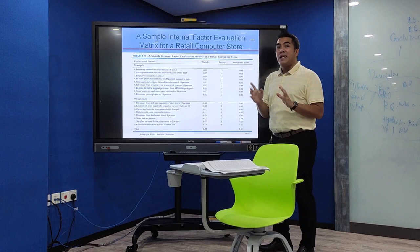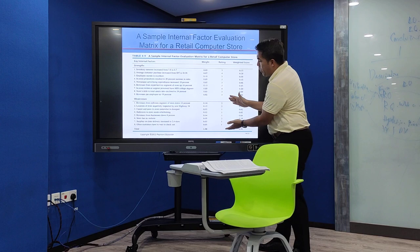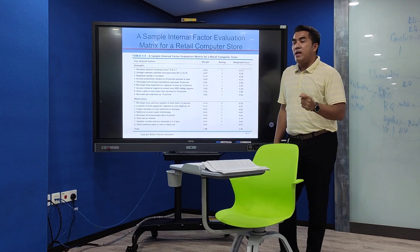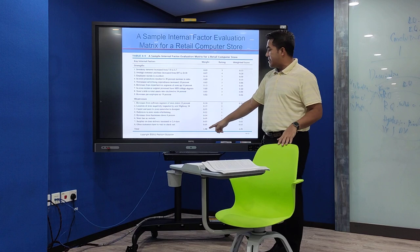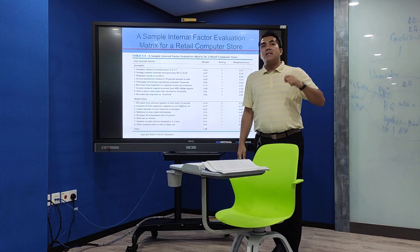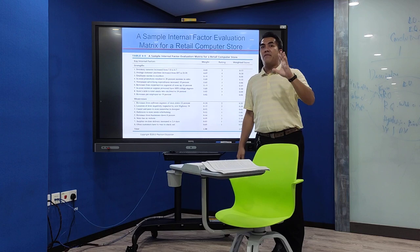In terms of rating, there is a key difference between the IFE and EFE matrices. For the IFE, ratings for strengths are only 3 and 4 — please check your notes carefully. Ratings for weaknesses are only 1 and 2. Do not make that mistake. For the EFE matrix, you list strengths, weaknesses, opportunities, and threats. Weights for strengths and weaknesses must total 1, and weights for opportunities and threats must also total 1. For EFE ratings, 1 means the company responds very poorly to that element, and 4 means they respond highly and have good strength toward that element.